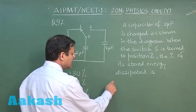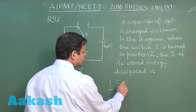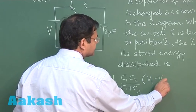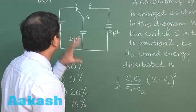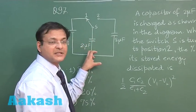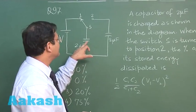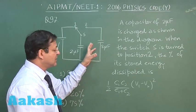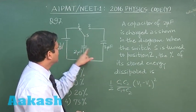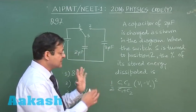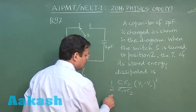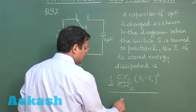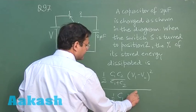The formula for loss is half C1 C2 upon C1 plus C2 into V1 minus V2 whole square. V1 is the potential of one capacitor. In the beginning, the energy will be stored here. V1 is V and V2 is 0 because it was uncharged. So here V, here 0. C1 C2 is 2 into 8 upon 2 plus 8. This was the energy dissipated upon the initial energy. Initial energy is stored only in this capacitor, half into C1 V square.